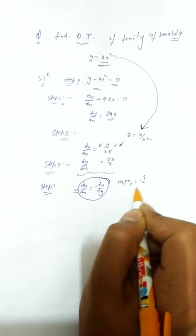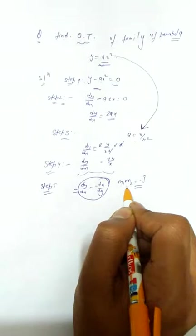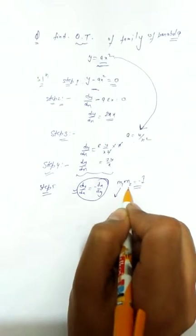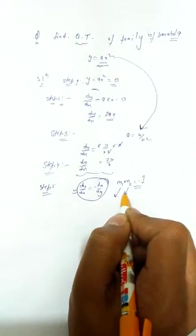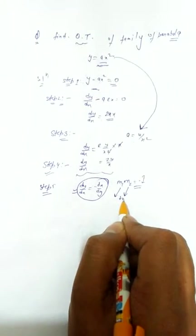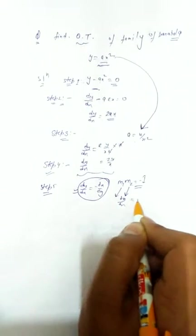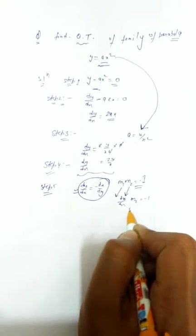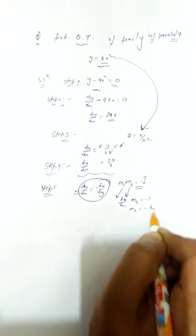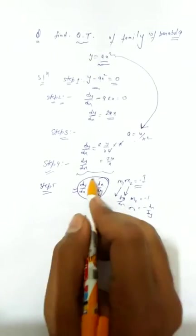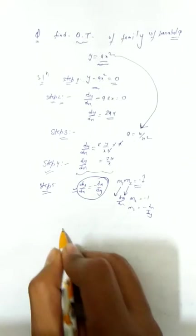The condition for orthogonal trajectories is m1·m2 = -1, where m1 is the slope of the first curve and m2 is the slope of the second curve. So we replace dy/dx with -dx/dy, giving -dx/dy = 2y/x.